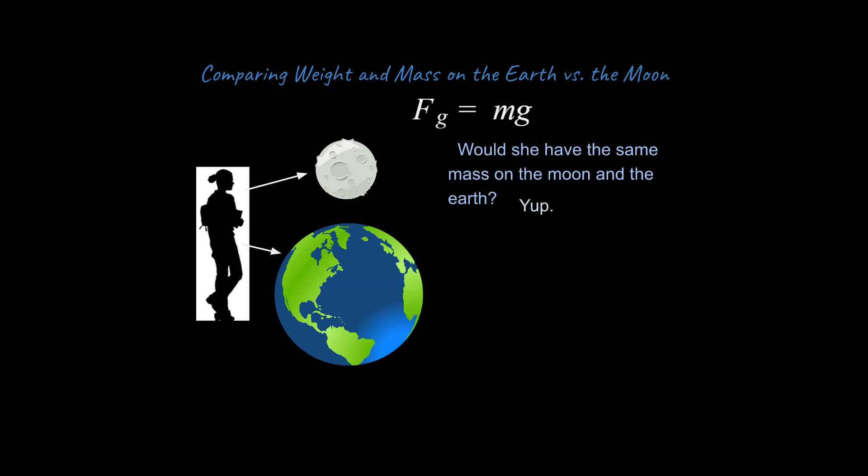The follow-up question, of course, is would she have the same weight on the moon and the earth, the same force due to gravity? What do you think? The answer is no, she would not. The reason is this g value will be different on the moon as it is on the earth. This comes from the radius of the earth and the mass of the earth. If she was on the moon as an astronaut, she would have a different g value on the moon. If you can understand the distinction between those two questions and their answers, then you get the main idea of the difference between mass and the force due to gravity.